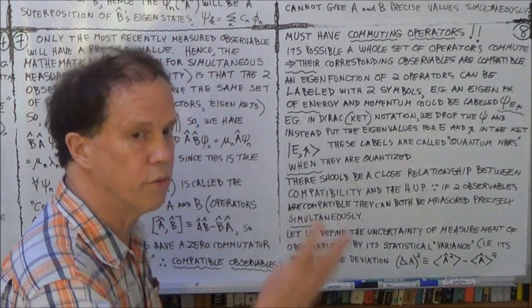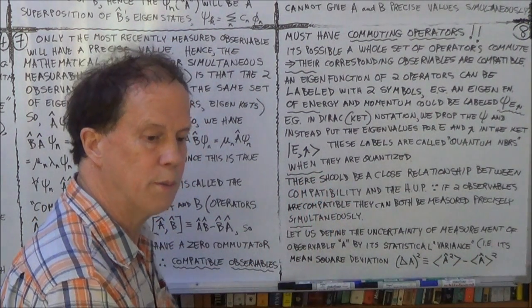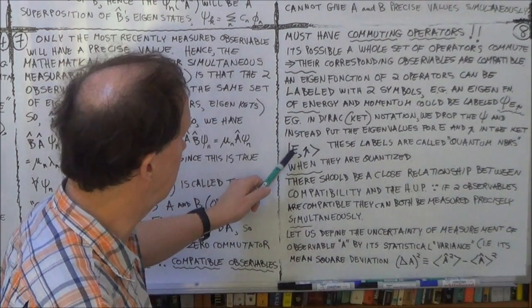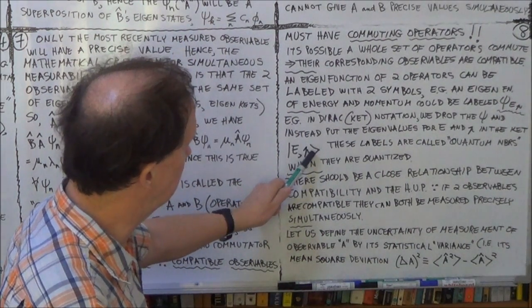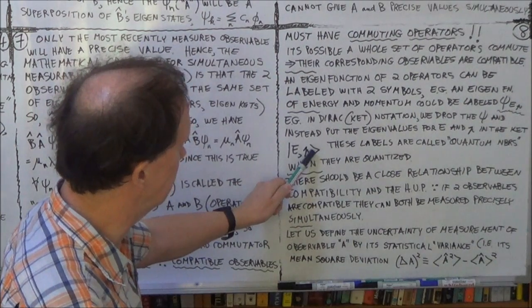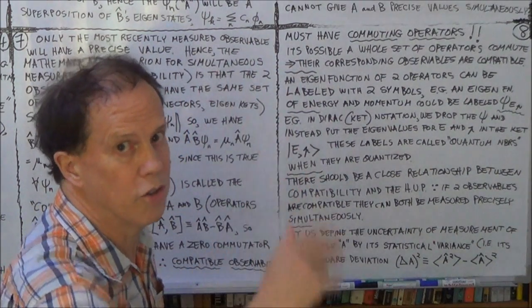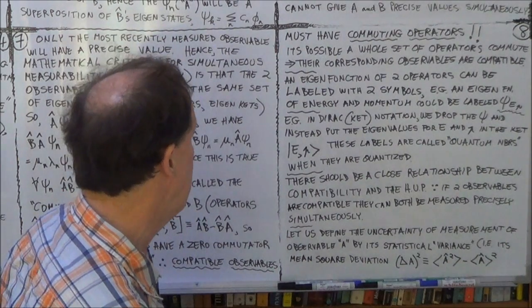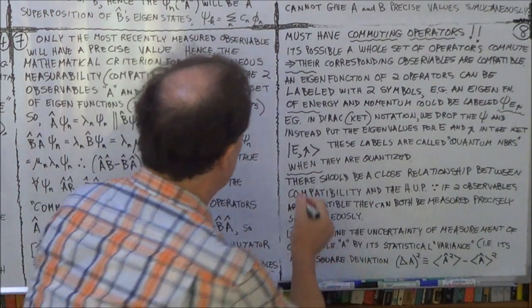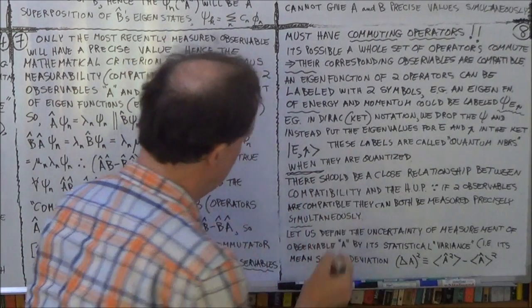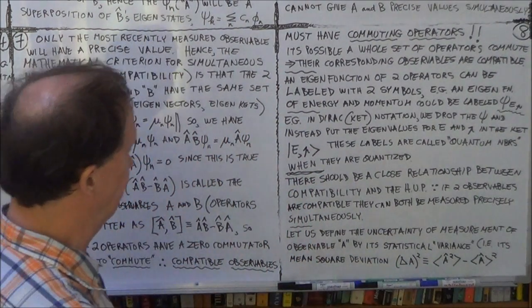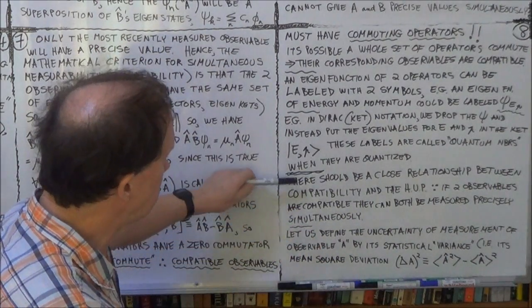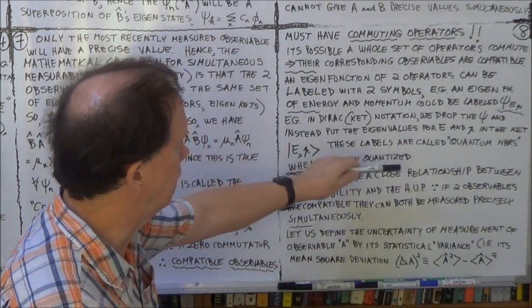And, if you had three observables that are compatible, and you measure all three, you might have an eigenstate that has a third eigenvalue written in here. That's possible. And you can generalize, take as many as you want. All right, now, perhaps I should put two bars. Running out of board, and the session. So, we're getting into a new topic now.